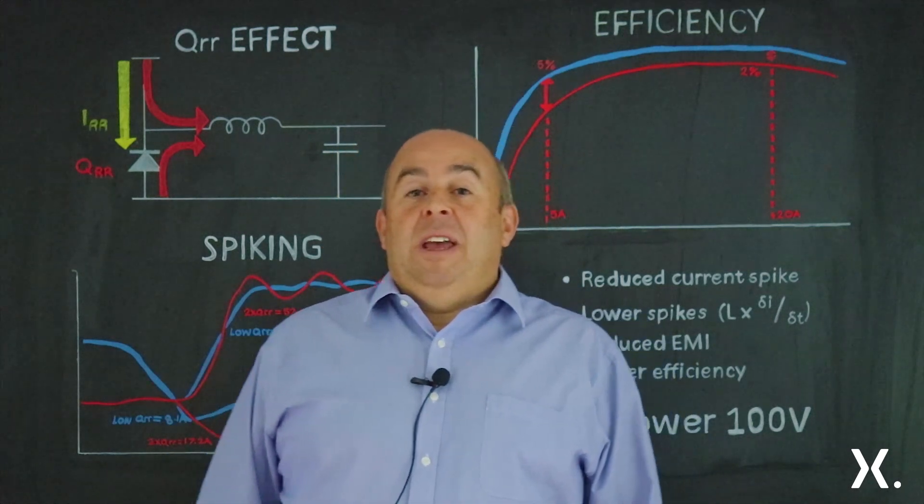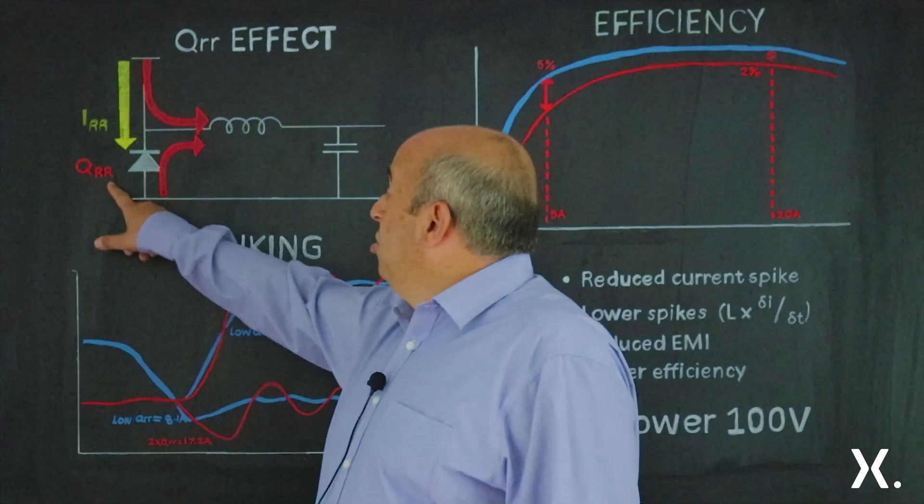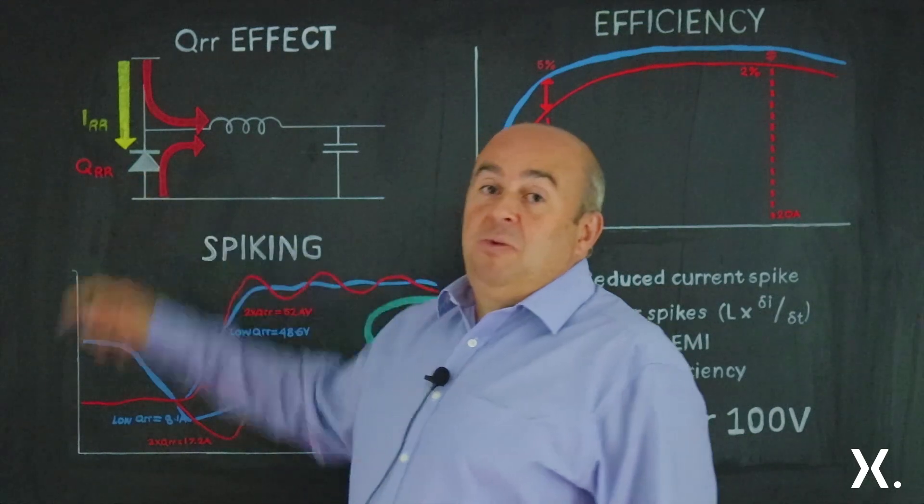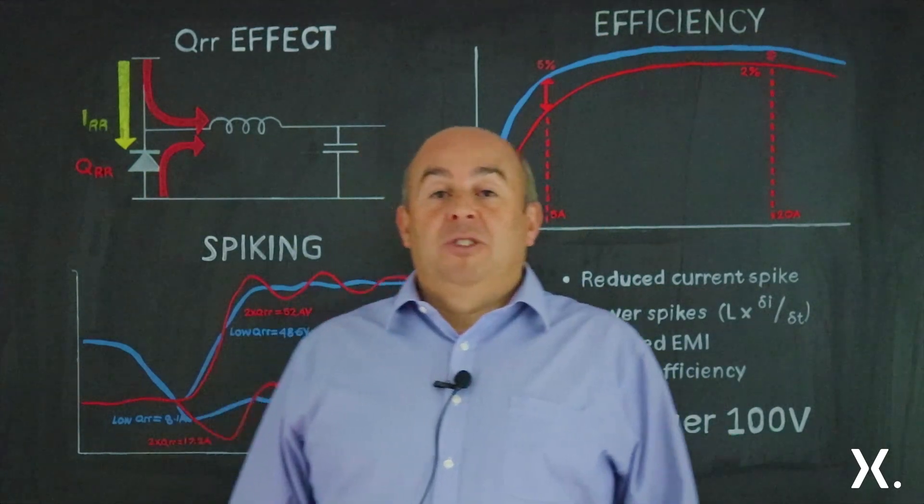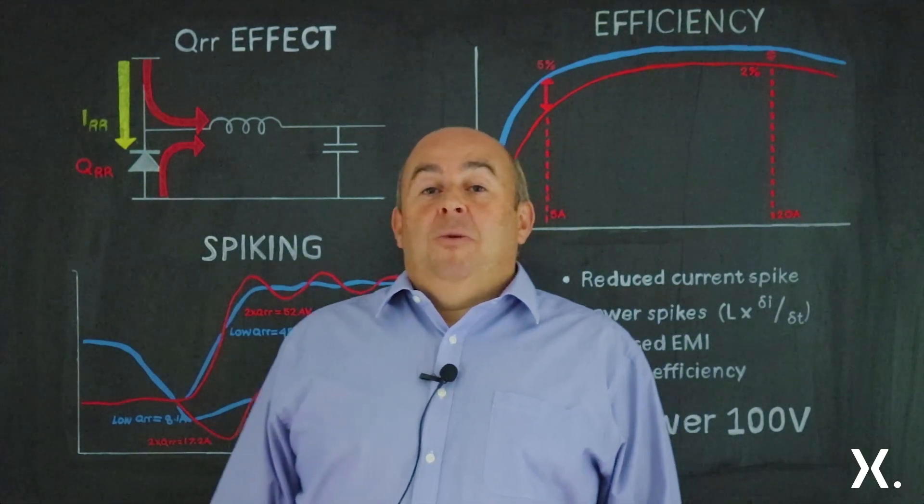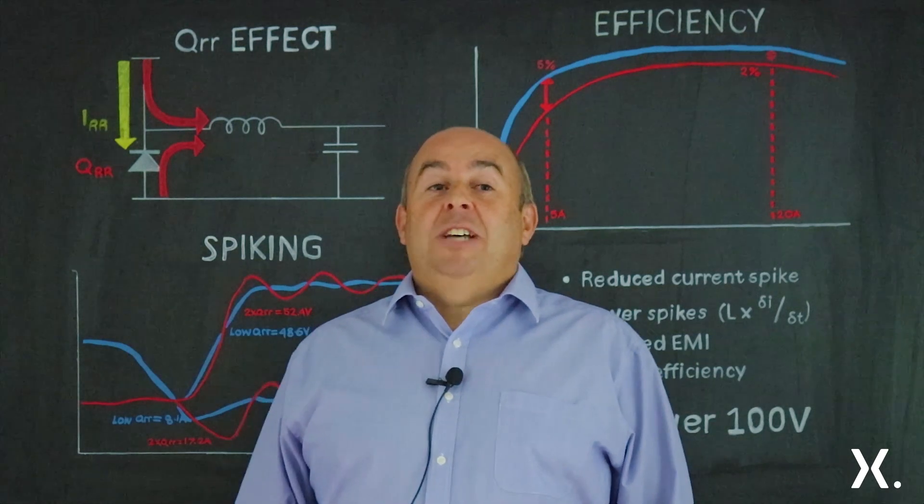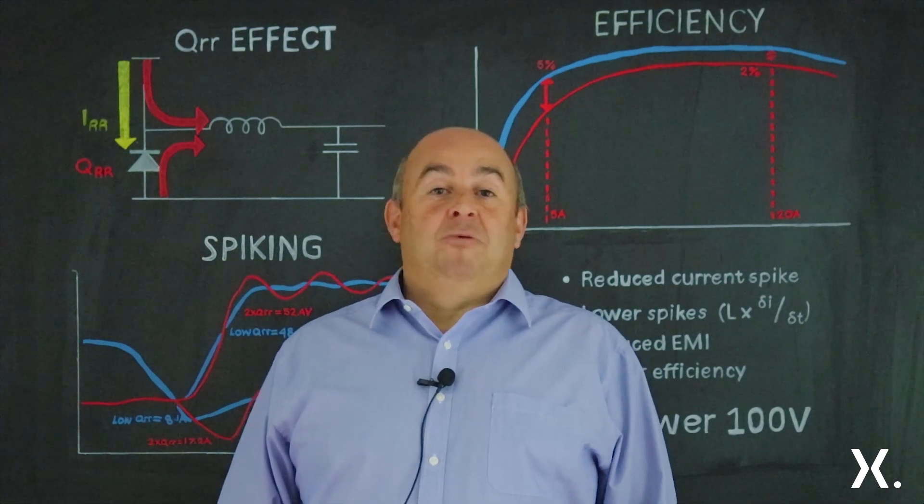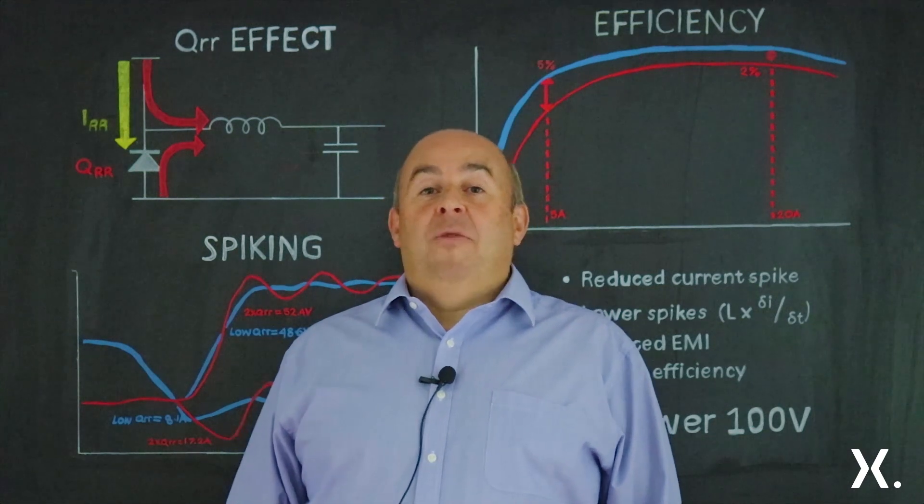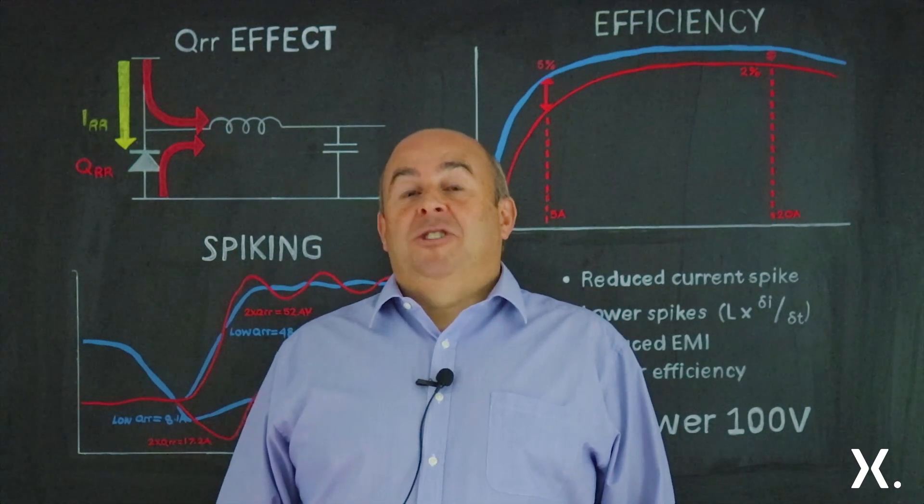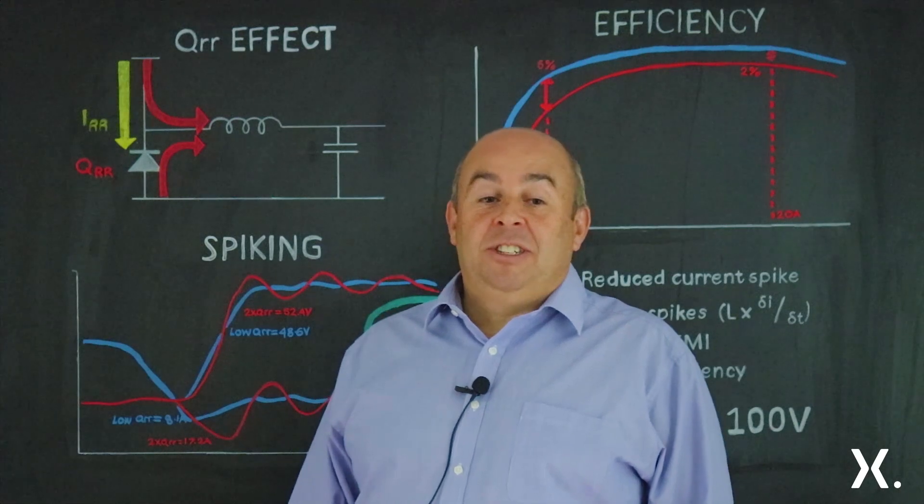QRR is the reverse recovery charge and it's associated with the body diode of the MOSFET. QRR is typically one of the last parameters given on a datasheet and as a result can often be overlooked or misunderstood by design engineers.